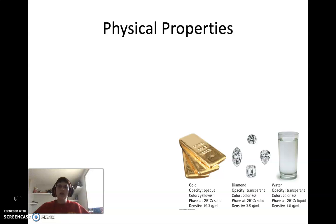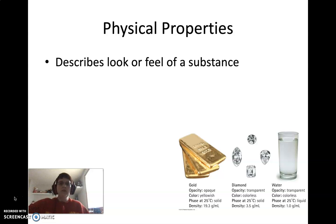The first thing is to talk about what physical properties are. Physical properties describe the look or feel of a substance. It can be an element like what we have here with gold or diamonds. With gold, it's going to describe that it's an opaque substance, so we can't see through it, versus a diamond, which is transparent, so we can see through it.